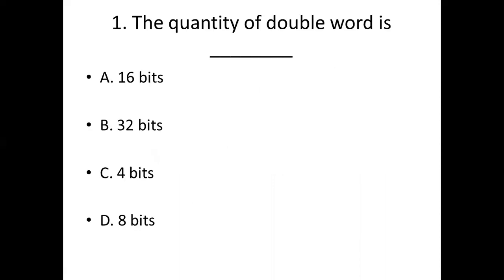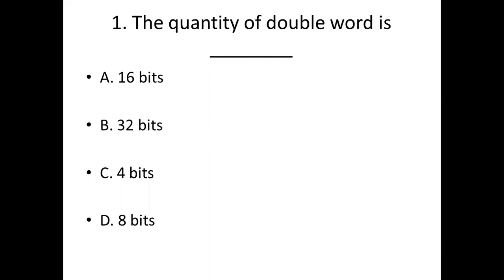First bit. The quantity of a double word is dash. Option A: 16 bits. Option B: 32 bits. Option C: 4 bits. Option D: 8 bits. Answer: Option B, 32 bits.